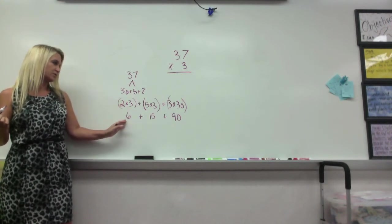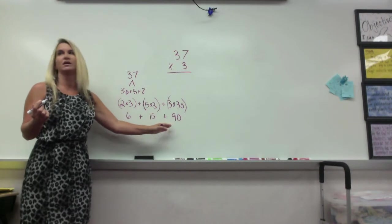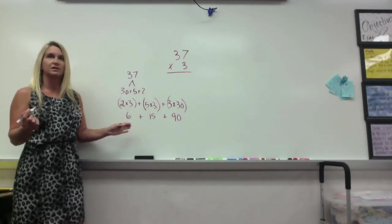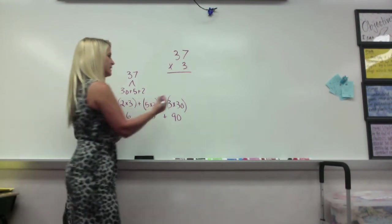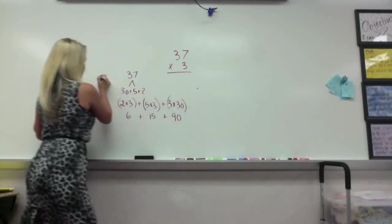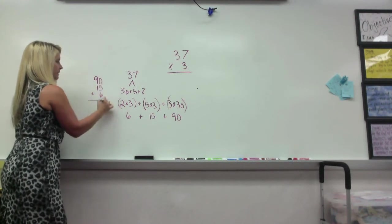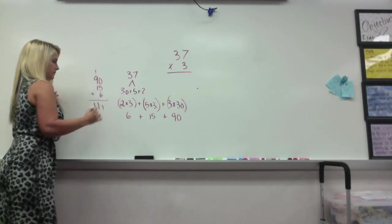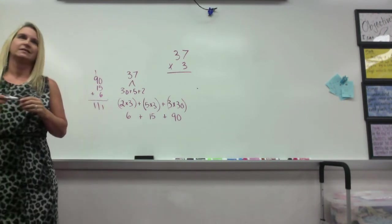So she had 2 times 3 equals 6, 5 times 3 equals 15, and 3 times 30 equals 90. Then what is she going to do with all these? Add them all up together. So 90, 15, and 6. I'm going to do it here. Raise your hand if you got an answer of 111.